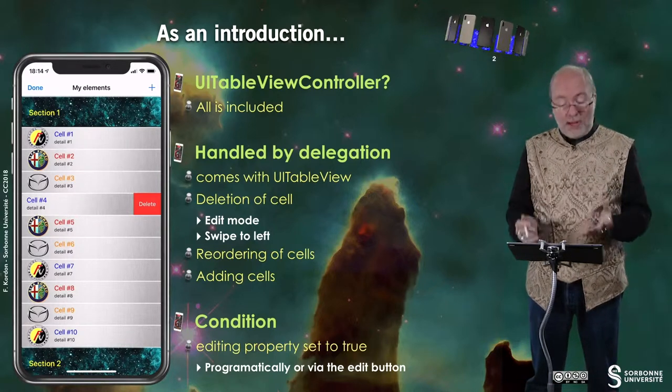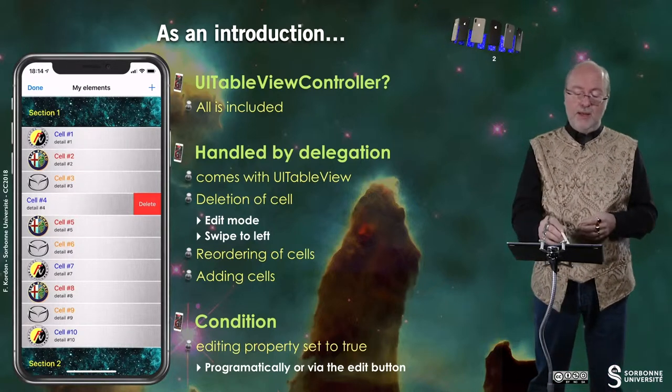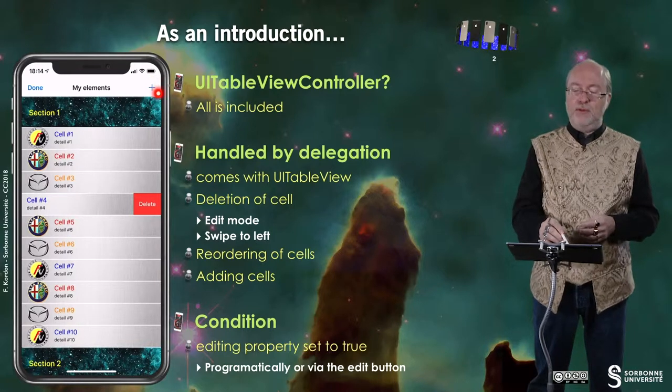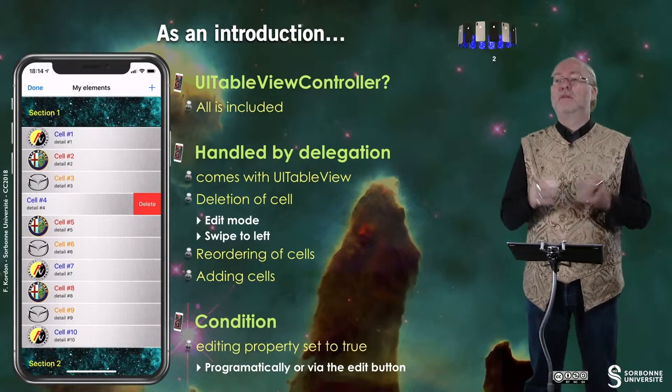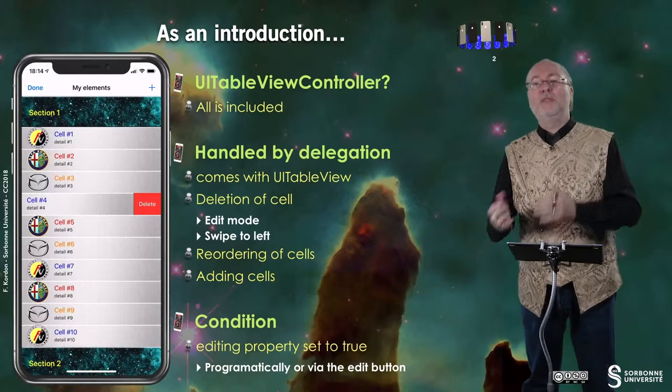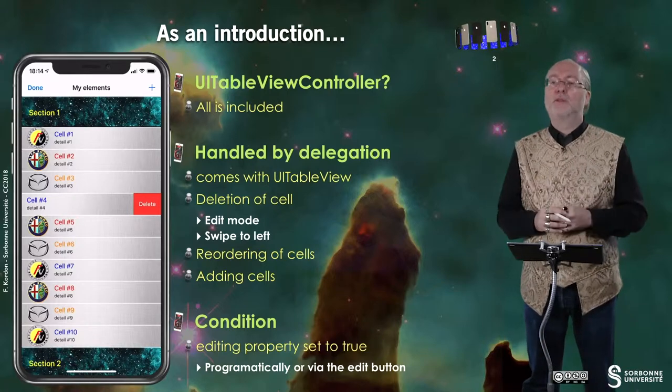You can also add cells. Typically, I have an action button that allows me to create a cell. The condition to do so is to set to true a property called editing, and if this property is set to true, then you can do the changes.